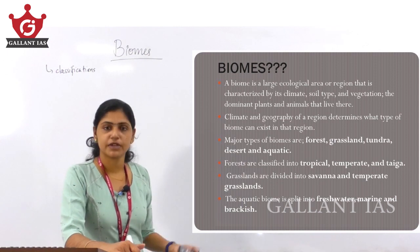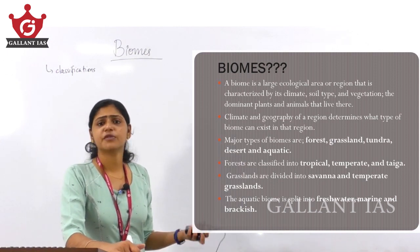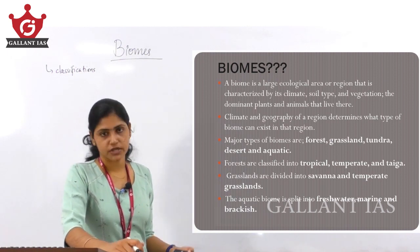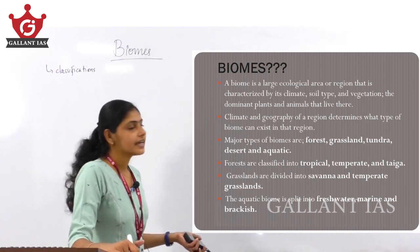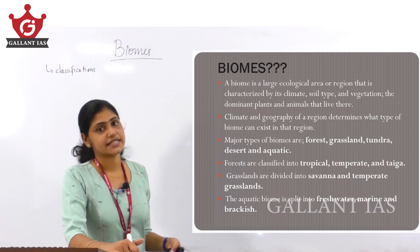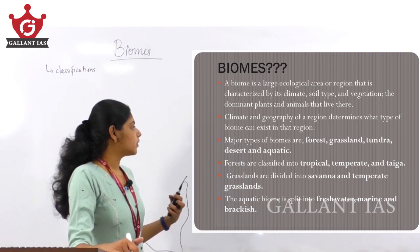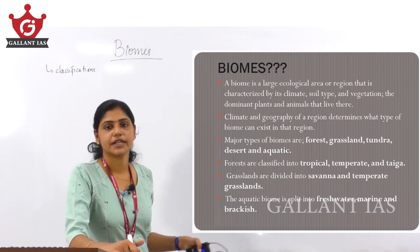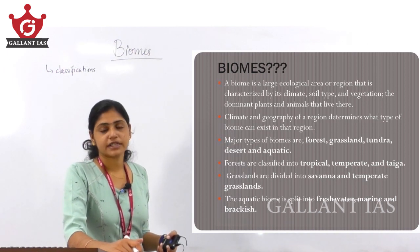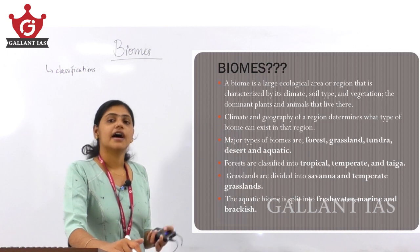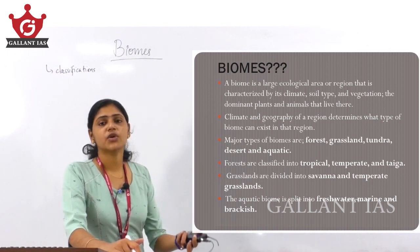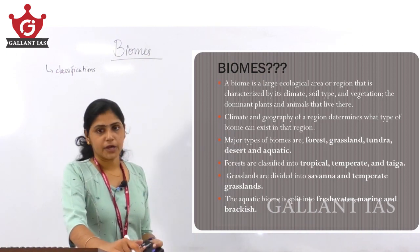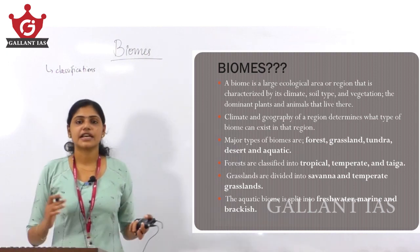Within forest, there are further subdivisions: tropical forest, temperate forest, and taiga — three broad divisions. Grasslands are subdivided into tropical grassland or savannah and temperate grasslands. Deserts also have classifications, and aquatic biomes are classified based on salinity into freshwater biomes, marine water biomes, and brackish water biomes.